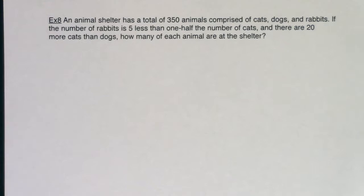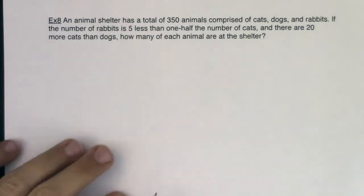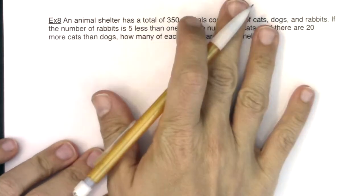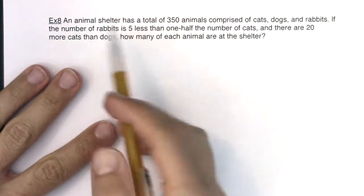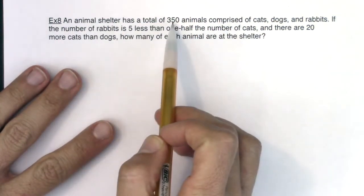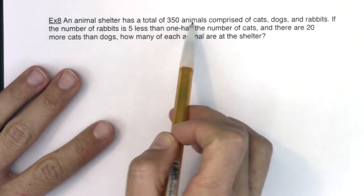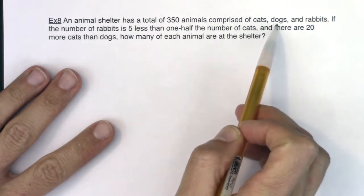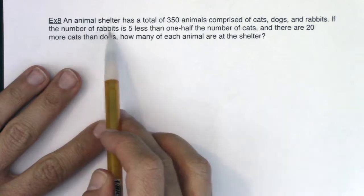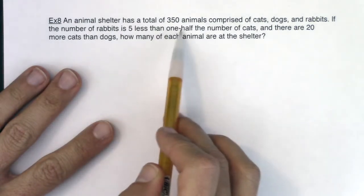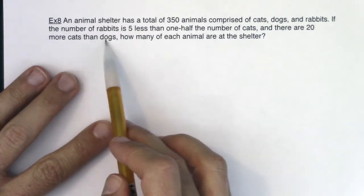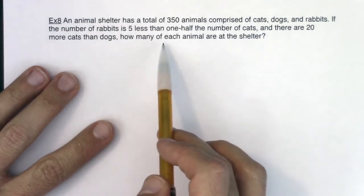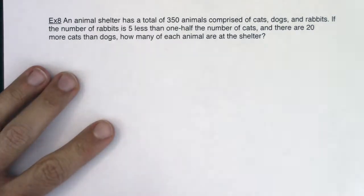Hey Math 31, welcome to example 8. We're going to read through this and I want you to listen for what are the variables in this problem. We have an animal shelter with a total of 350 animals comprised of cats, dogs, and rabbits. If the number of rabbits is five less than one-half the number of cats and there are 20 more cats than dogs, how many of each animal are at the shelter?